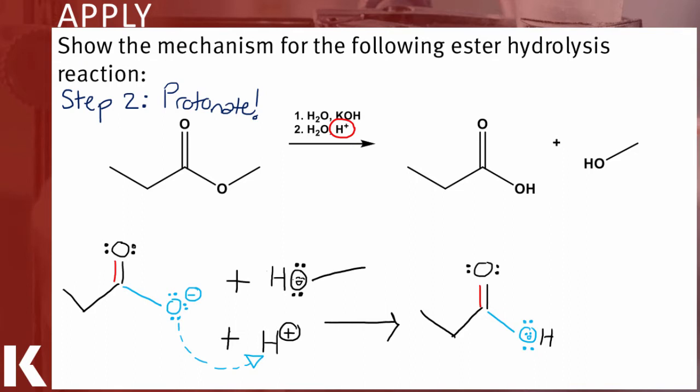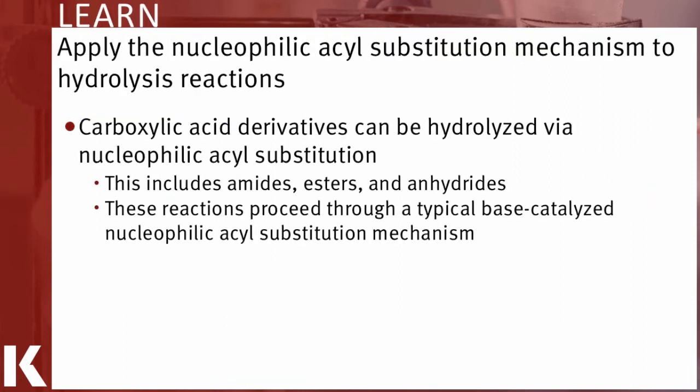And your final product will have transformed an ester into a carboxylic acid and a methanol. To summarize, you can use base-mediated nucleophilic acyl substitution to chop up amides, esters, and anhydrides in order to turn them into carboxylic acids.